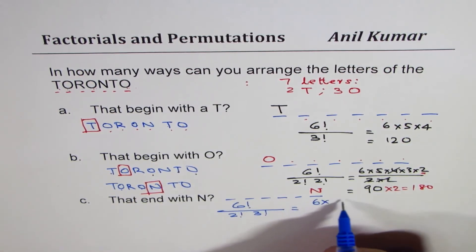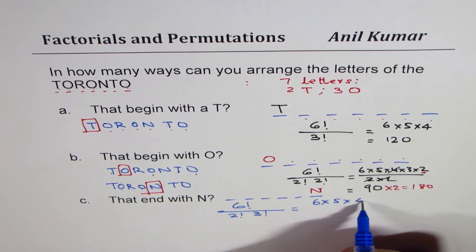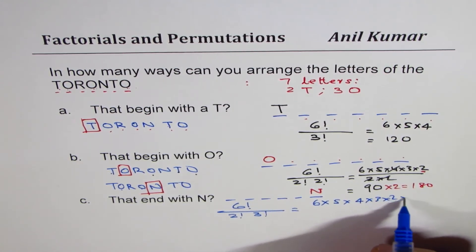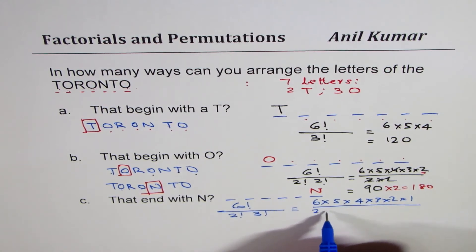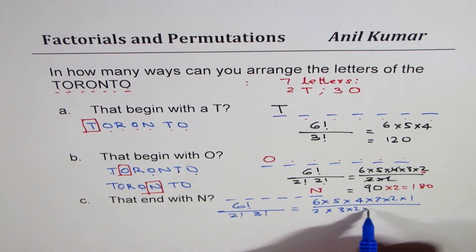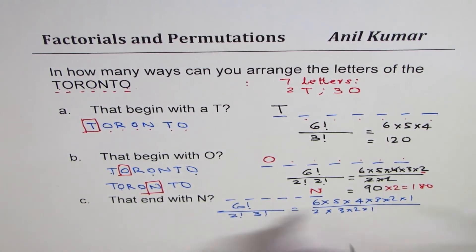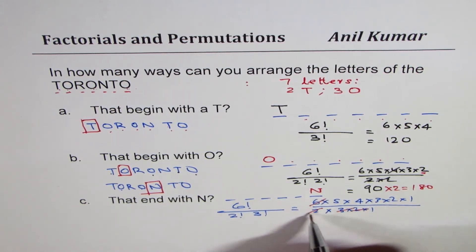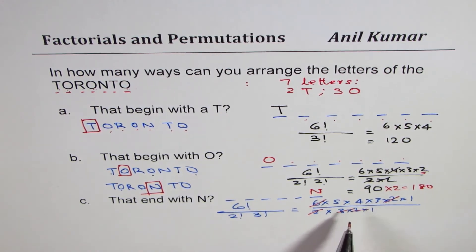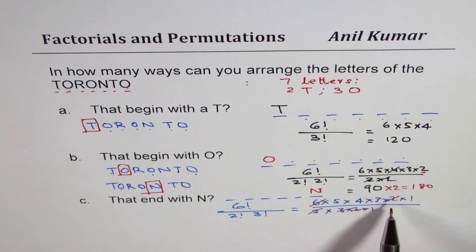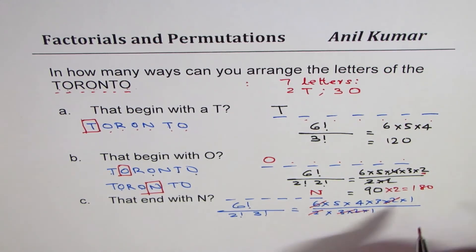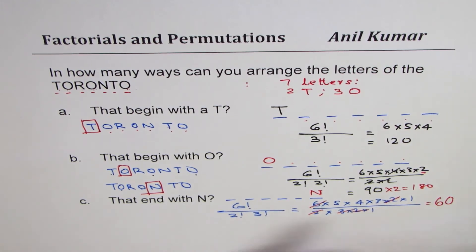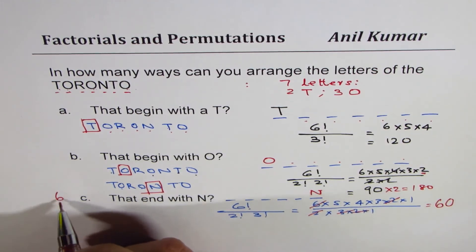So that means six times five times four times three times two times one, divided by two times one times three times two times one. Cancelling three times two is six, and the two also cancels, leaving five times four, which is twenty. Twenty times three is sixty — so sixty is the answer for the third condition.